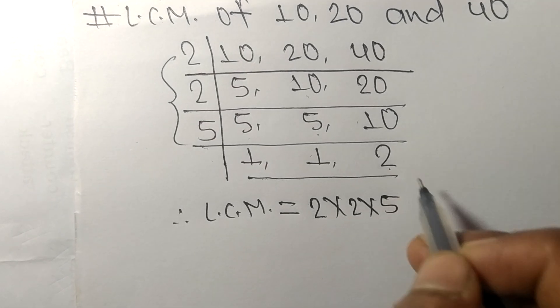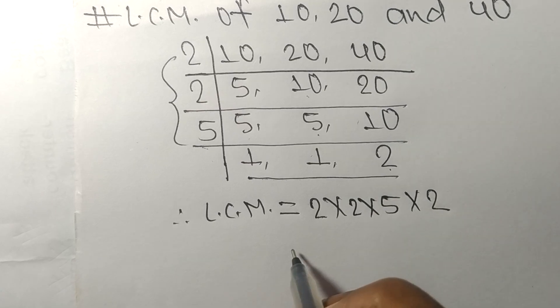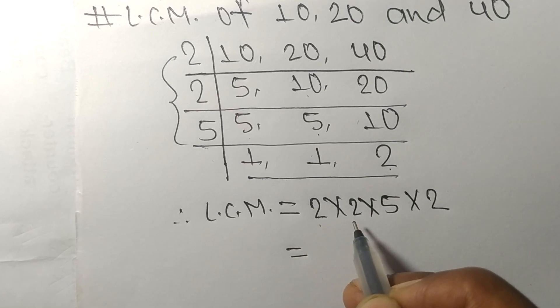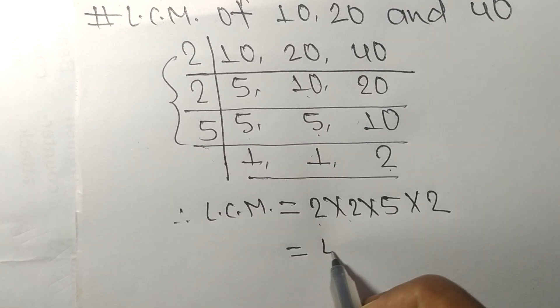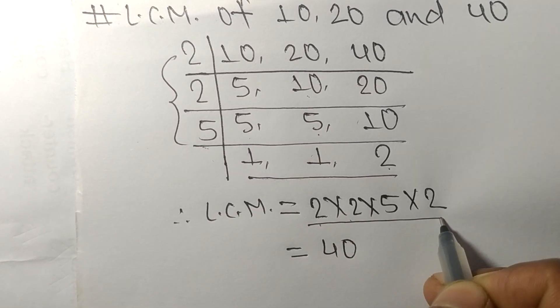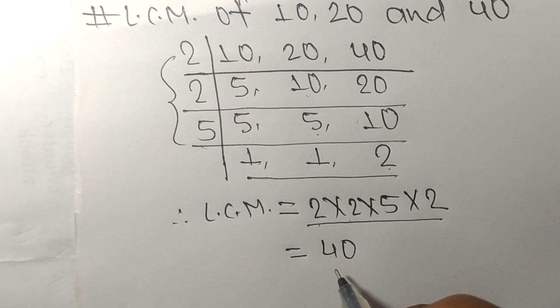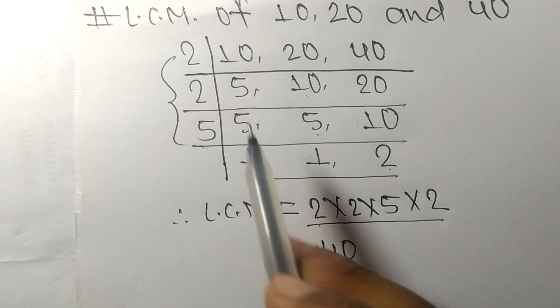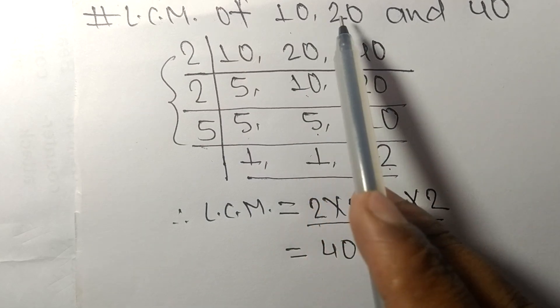This 2 times 2 means 4, 4 times 5 means 20, 20 times 2 means 40. So by multiplying all these numbers we got 40. So 40 is the LCM of 10, 20, and 40.